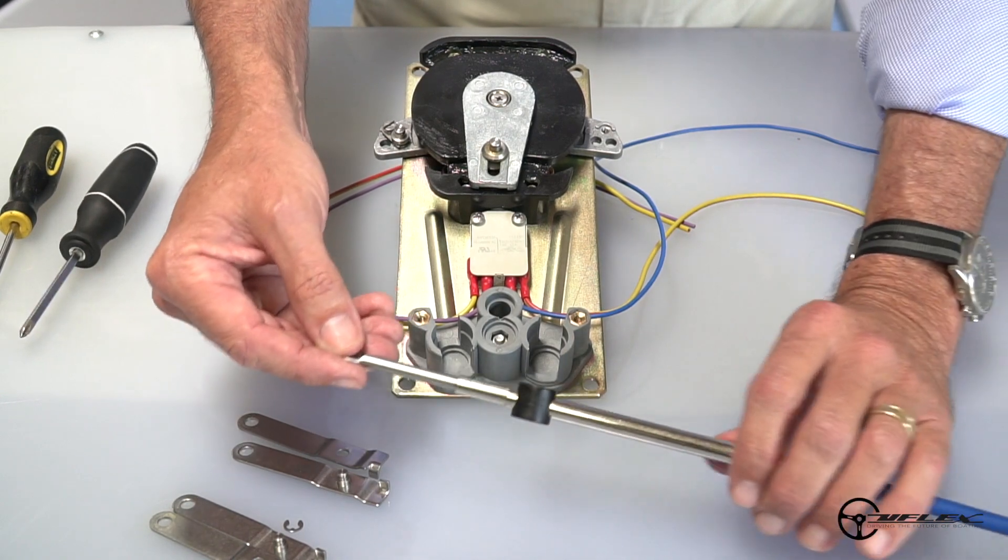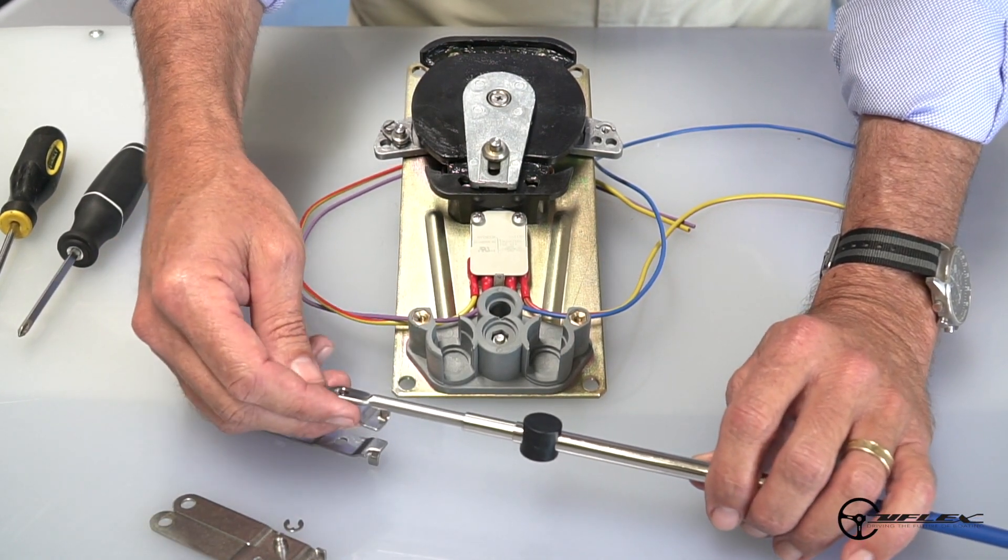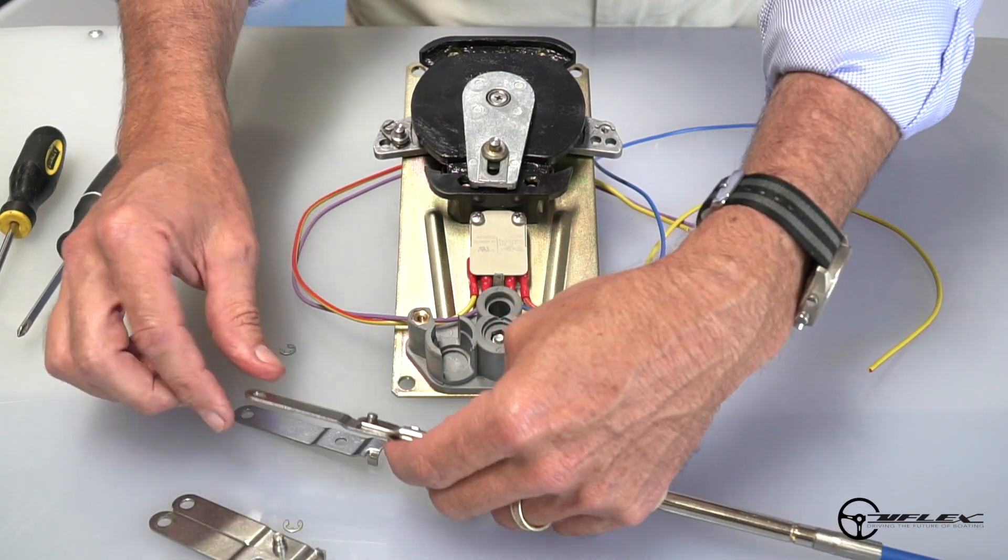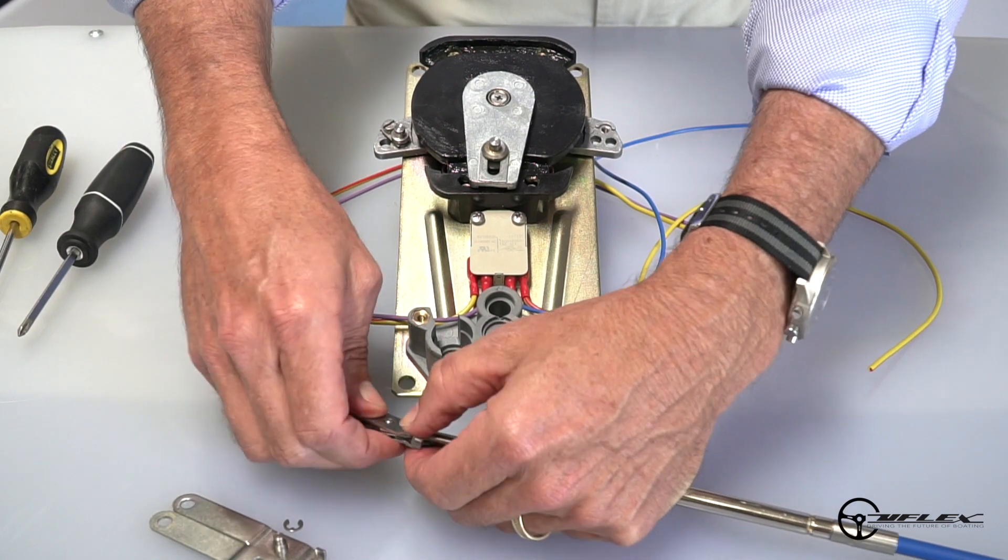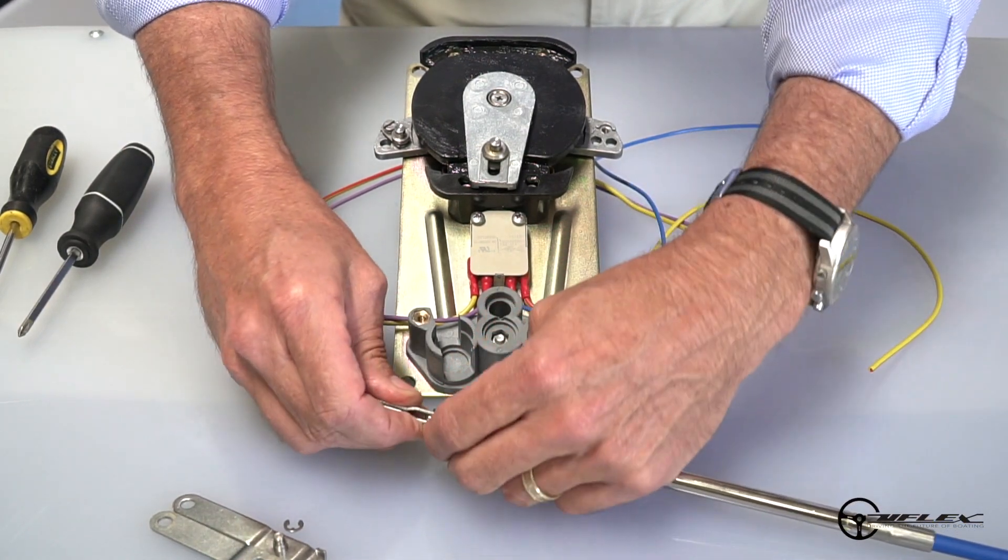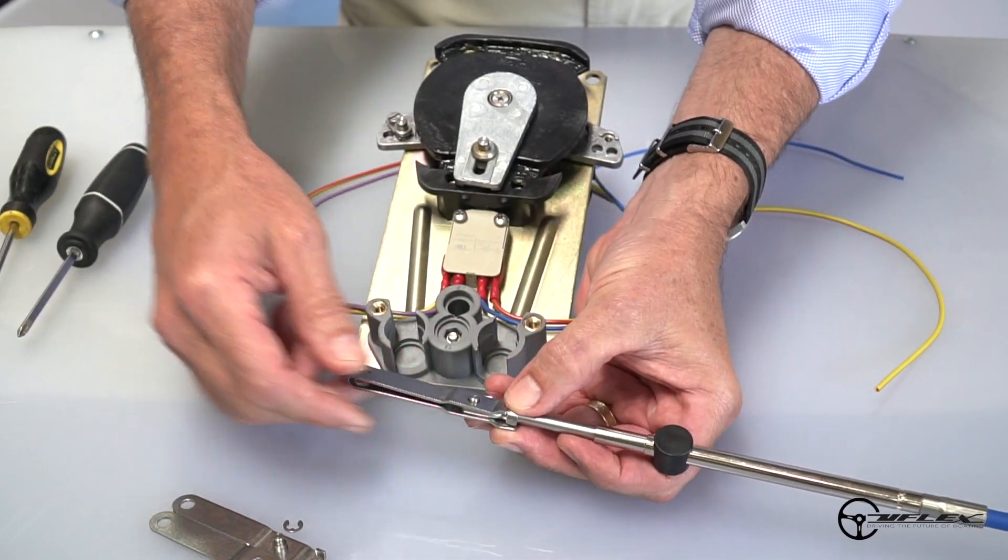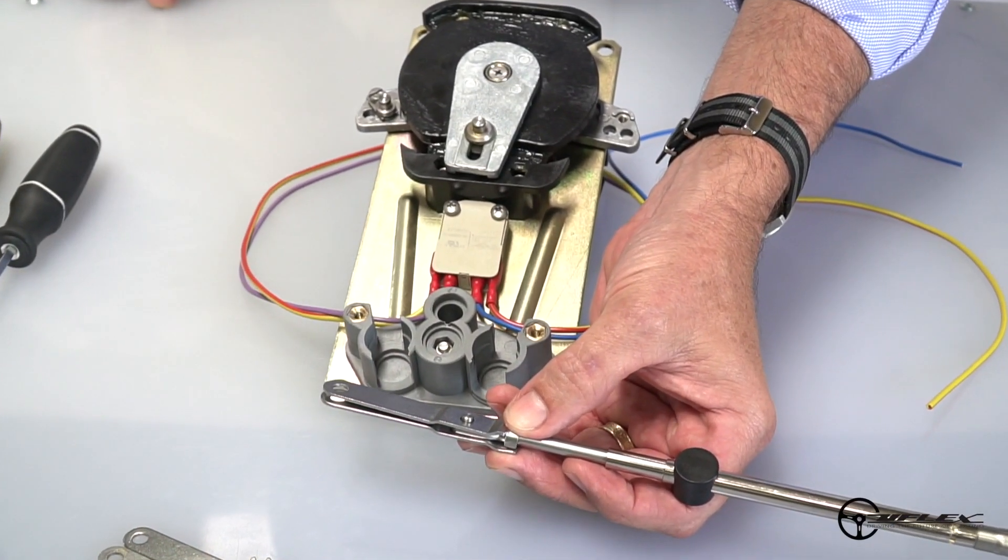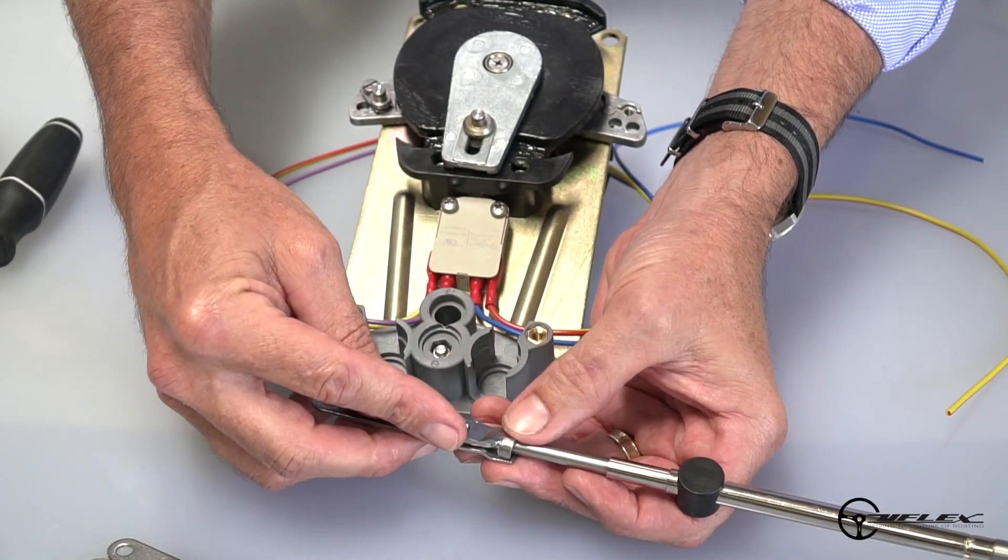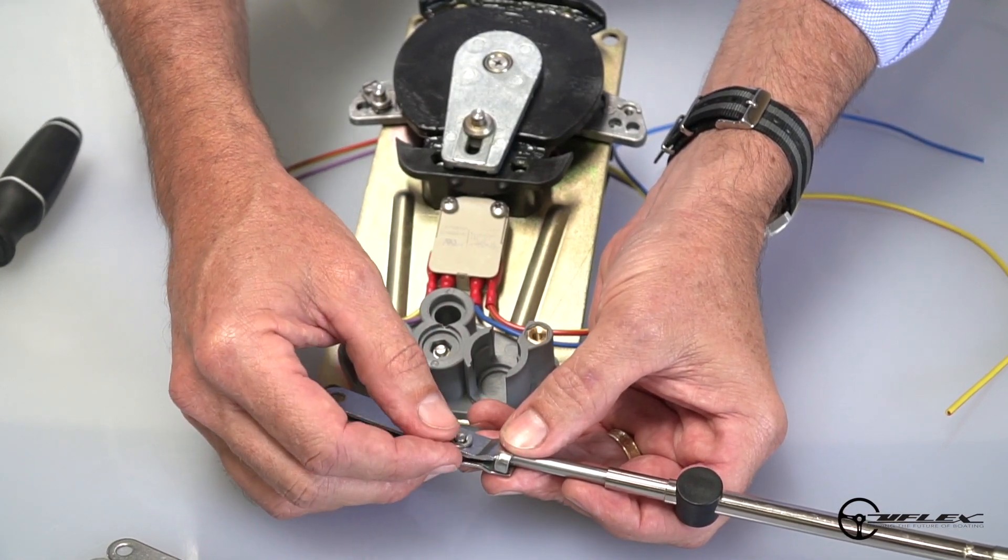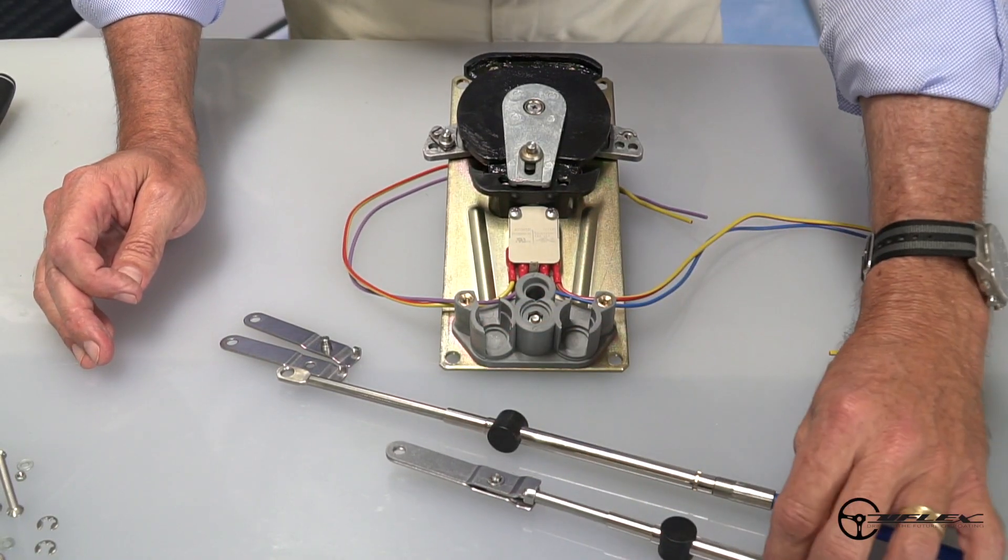Before installing the Mercury Gen 1 cable on the control, I have to put the K35 connection kit on here. The K35 effectively extends the length of the cable so I can attach it to the control. I attach the K35 using a small circlip that locks the cable together. Now I have my K35 installed on my throttle cable.